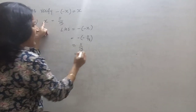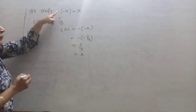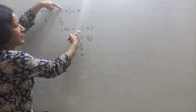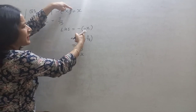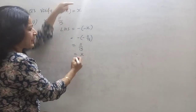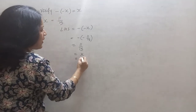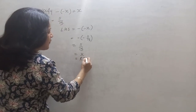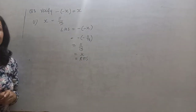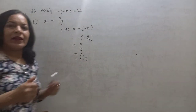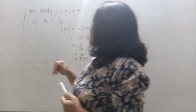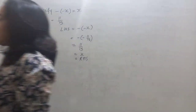And 11 upon 15 is the value of x. So we started from the left hand side, minus of minus x, and reached the right hand side. Hence verified.